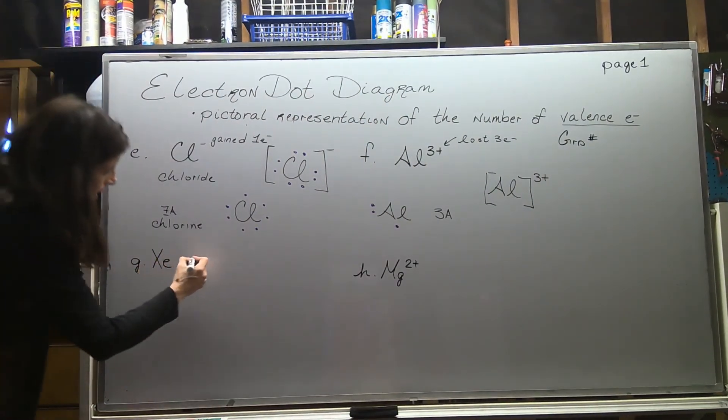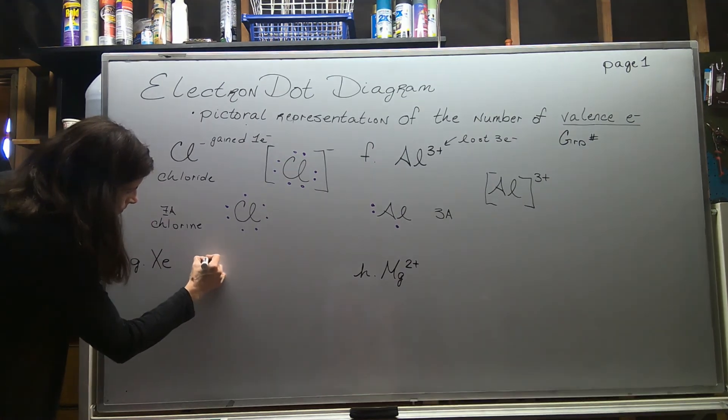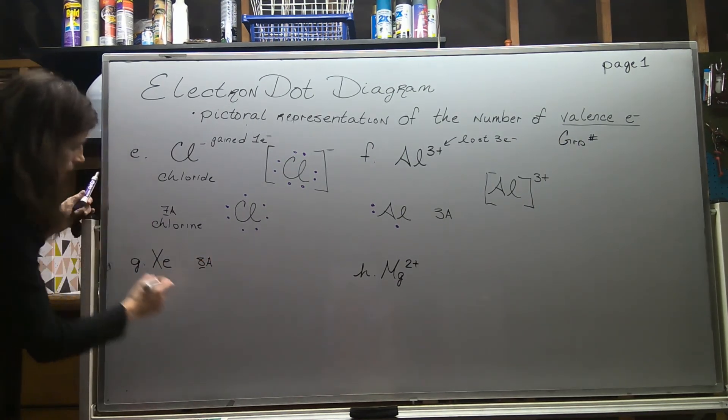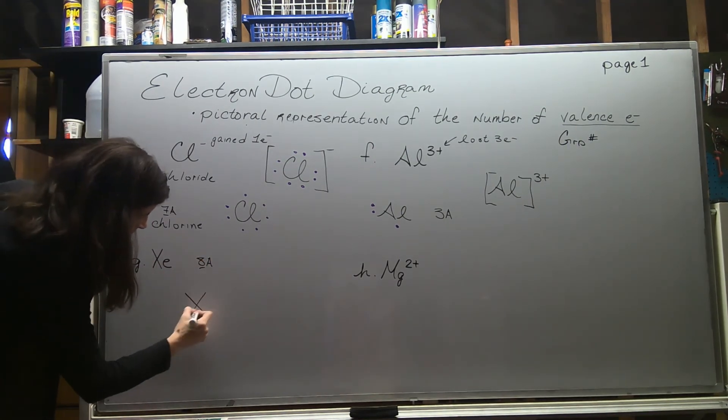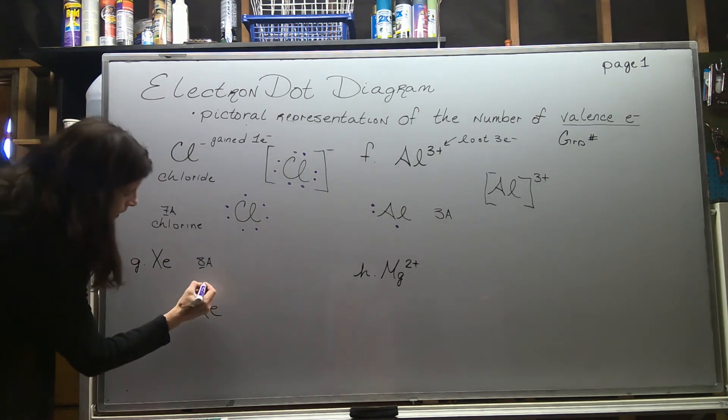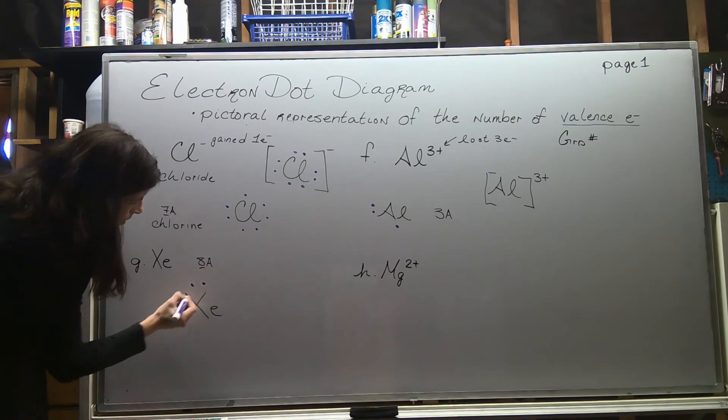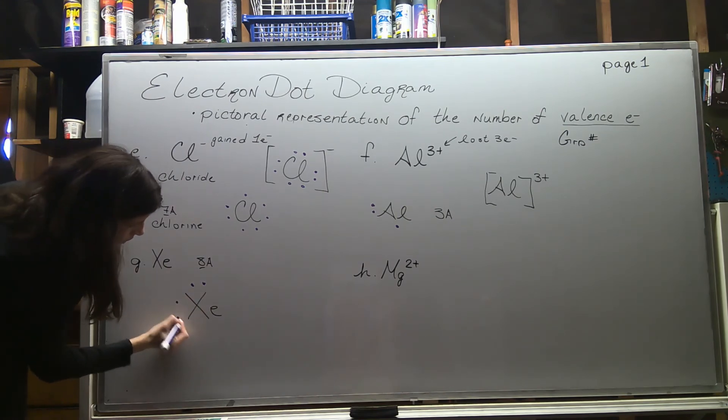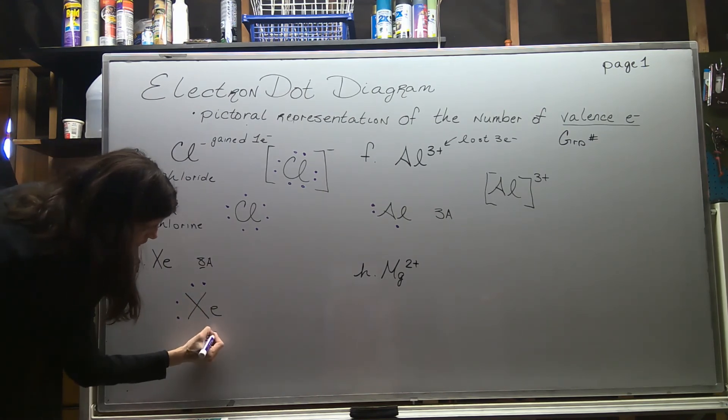Xenon is in group 8A, so eight valence electrons. Eight is the maximum, the ideal number of valence electrons. That means you have a completely full and stable outside shell.